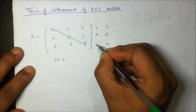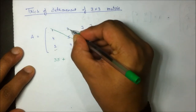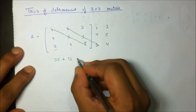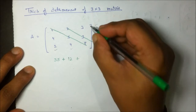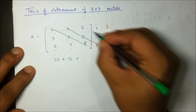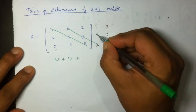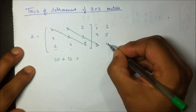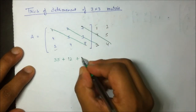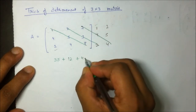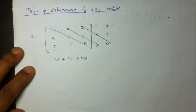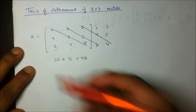The second upper diagonal 2×3×2 gives me 12. Then the third upper diagonal: 3×4×4 = 48. Adding all upper diagonals: 35 + 12 + 48 = 95.